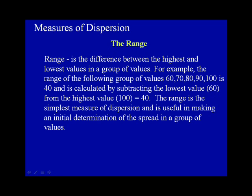The range is the difference between the highest and lowest values in a group of values. For example, the range of the following group of values — 60, 70, 80, 90, and 100 — is 40, and is calculated by subtracting the lowest value, 60, from the highest value, 100, which equals 40. The range is the simplest measure of dispersion and is useful in making an initial determination of the spread in a group of values.